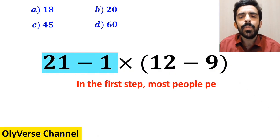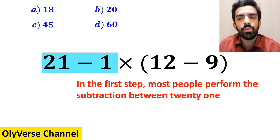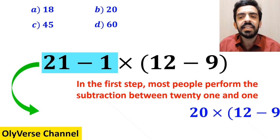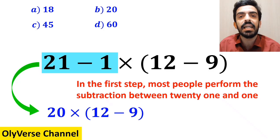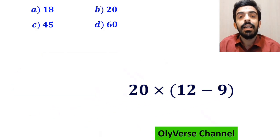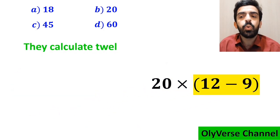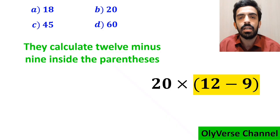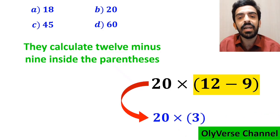In the first step, most people perform the subtraction between 21 and 1, which I have highlighted in blue. So this expression simplifies to 20 multiplied by 12 minus 9 inside the parenthesis. In the next step, they calculate 12 minus 9 inside the parenthesis, which becomes 20 multiplied by 3.